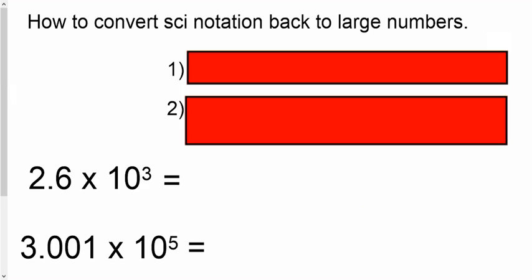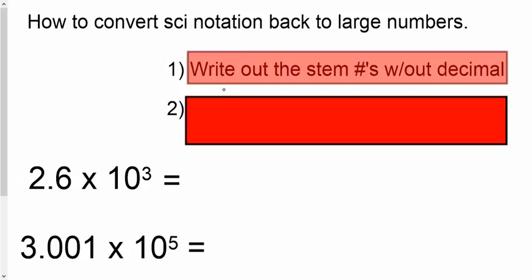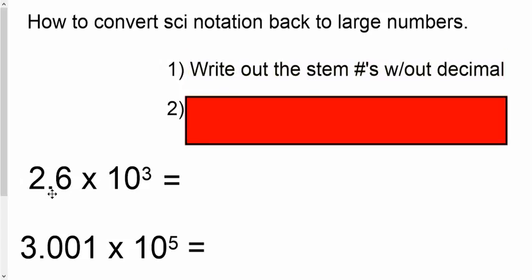The last part of our lesson is how do you convert scientific notation back to large numbers? Well, here's your scientific notation right here. Write out the stem without the decimal. So, here's our stem, 2.6. So, let's write it out without the decimal. Here's a two and a six.